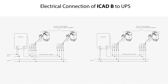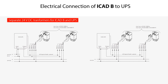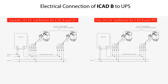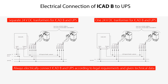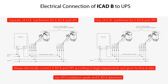Here you see two options of how to electrically connect the ICAD-B to the UPS: with separate 24-volt DC transformers for the ICAD-B and the UPS, or with one common 24-volt DC transformer for both the ICAD-B and the UPS. You should always electrically connect the ICAD-B and the UPS according to legal requirements and the given technical data. You can find more information in the UPS installation guide and the ICAD-B data sheet.